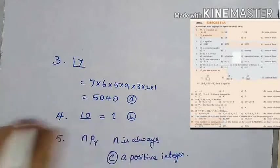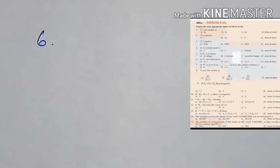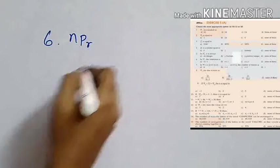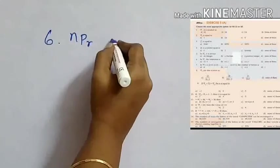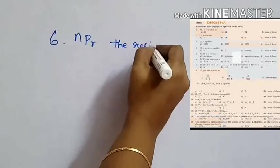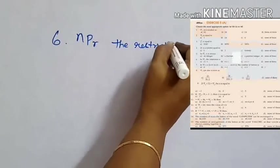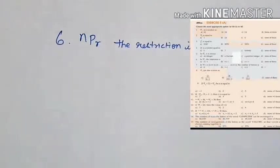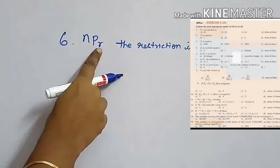In the next question: In NPR, the restriction is — what is the restriction in NPR? Option B: N should always be greater than or equal to R.